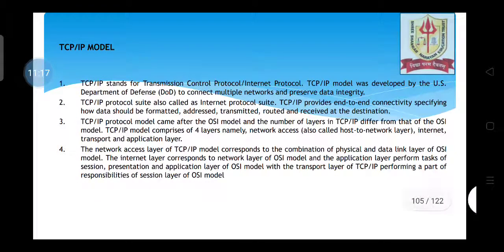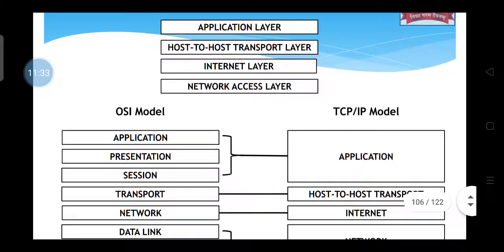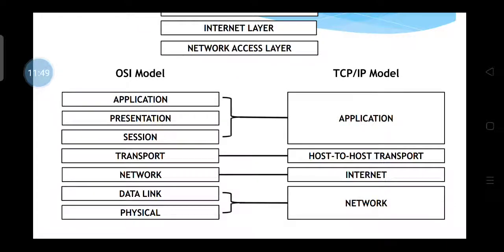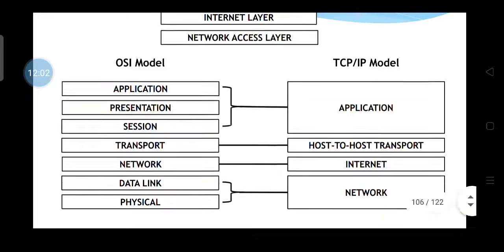Regarding the TCP/IP model, like the OSI model, the TCP/IP model was developed by the Department of Defense. While the OSI model has seven layers, the TCP/IP model has four layers. The mnemonic for TCP/IP is NITA — network, internet, transport, and application layer. In TCP/IP, the tasks performed by session, presentation, and application in OSI are all managed by the application layer, and the tasks of physical and data link are managed by the network layer.